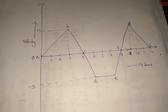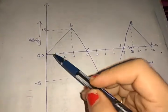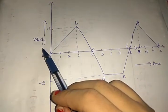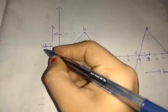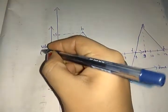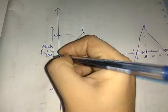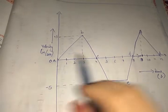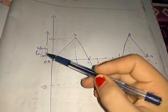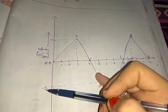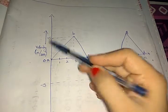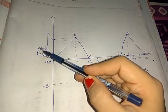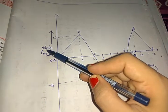Here is a velocity-time graph. We know that velocity is a vector quantity, so it has direction. The unit of velocity is meters per second, and the unit of time is seconds — always mention units when plotting a graph. In this figure, velocity has values of positive 5 and minus 5.